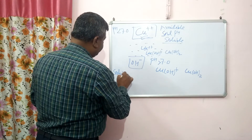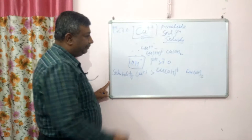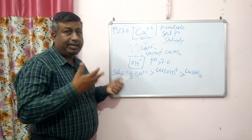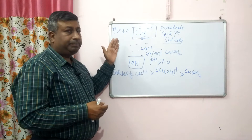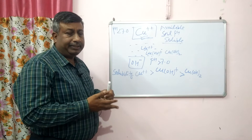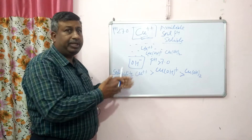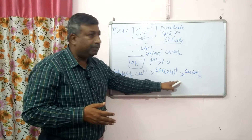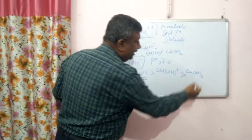As far as solubility in soil solution is concerned, Cu²⁺ is the most soluble, then the less soluble CuOH⁺, and the least soluble is copper hydroxide Cu(OH)₂. At higher pH, hydroxide formation takes place. So plants absorb copper in the Cu²⁺ form, and when pH is less than 7, copper is available in this form. This is the trend of solubility.